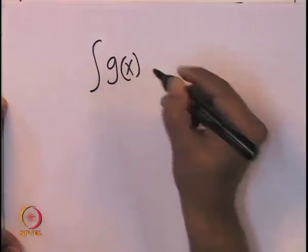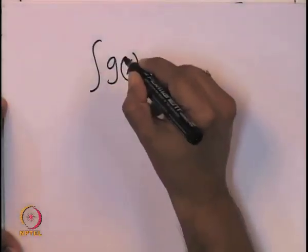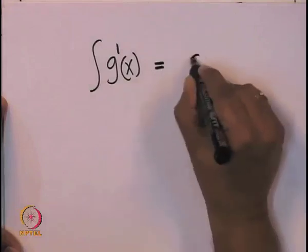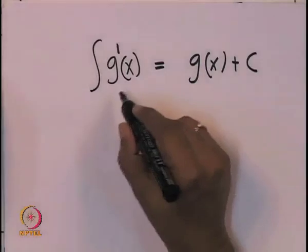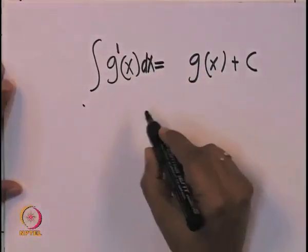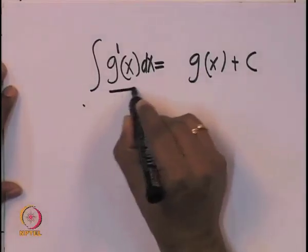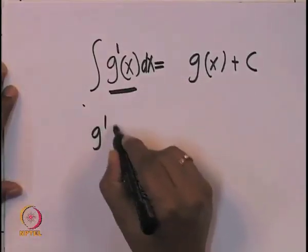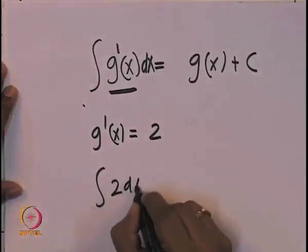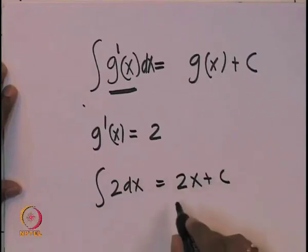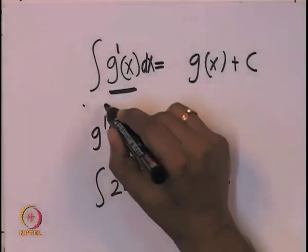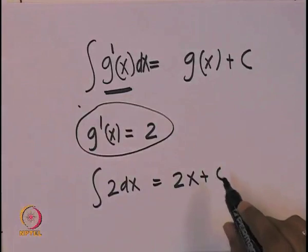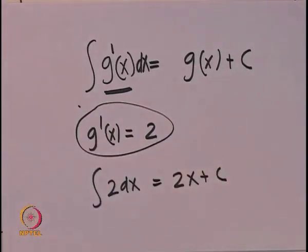We said that if you have a function which has an integral — let us say, integral of g prime of x — the answer could be g of x plus some constant c. So, the integral of g of x dx tells you to find a curve which has a slope g prime of x. For example, if g prime of x is 2, integral of 2 dx is basically 2x plus c, which is a line with slope 2. Such integrals are called indefinite integrals.